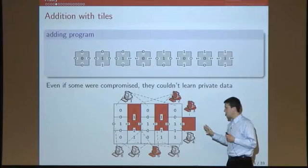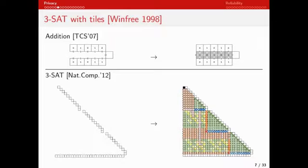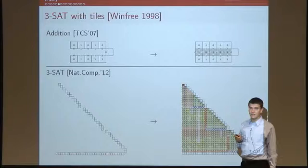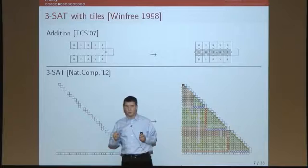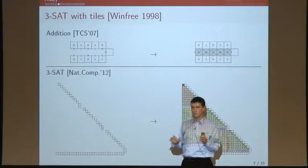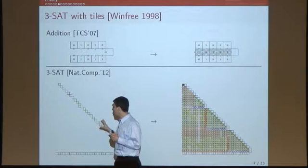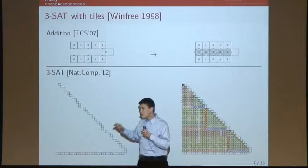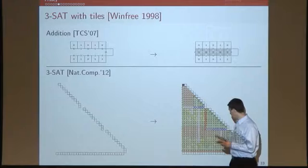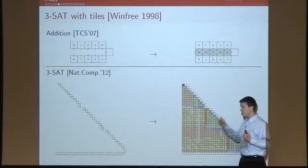The same thing you do with addition you can do with more complex problems. You can do the same thing with satisfiability. Here's a system that solves 3SAT — I'm not going to focus on how the 3SAT tile system works, but I encourage you to look at the Natural Computing paper. The idea: you encode the 3SAT formula using tiles. Instead of 8 different tile types for addition, it has 64 different tile types, and these tile types attach, grow, and find the right answer to the problem.